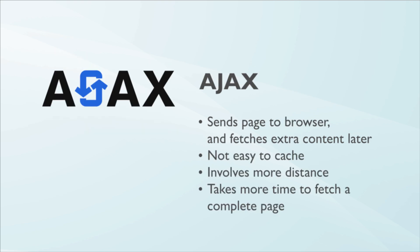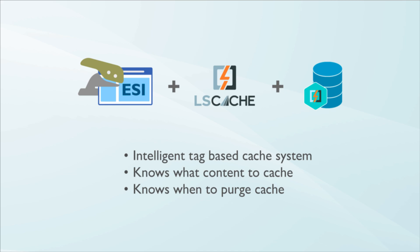Ajax requires sending the page to the browser initially, then it fetches the extra content afterwards. It's not easy to cache and involves more distance, meaning it takes more time to fetch a complete page. ESI, mixed with LSCache plugins and the LSCache server module, creates an unmatched combination. The plugin uses Lightspeed's intelligent tag-based cache system, so it knows what content can be cached and when to purge it.